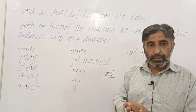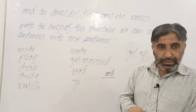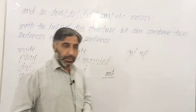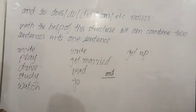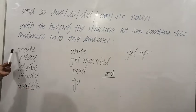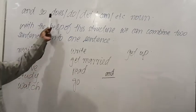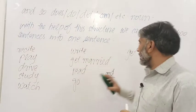ایک طریقہ یہ ہے کہ ہم do یا does present independent tense میں use کرتے ہیں، did past independent tense میں، اور can وغیرہ modal auxiliaries میں استعمال ہوتے ہیں۔ جب ہم دو جملوں کو ایک جملے میں بیان کرنا چاہیں تو we can use this structure. For example: Bilal recites the Holy Quran — احمد recites the Holy Quran — when we want to combine into one sentence, we will say: Bilal recites the Holy Quran and so does Ahmad.